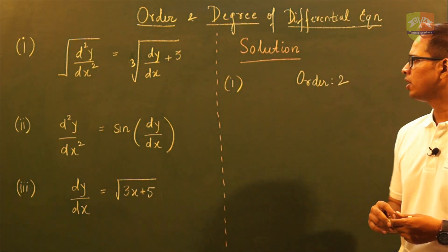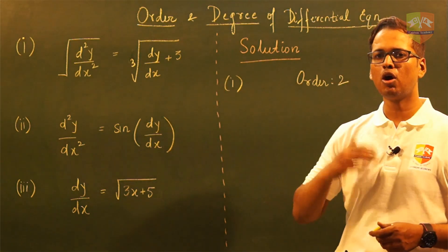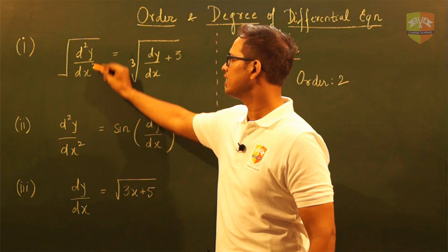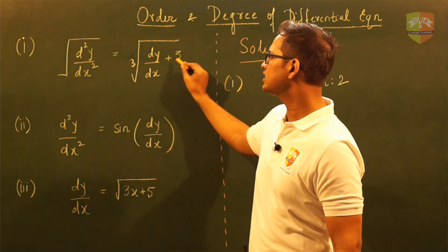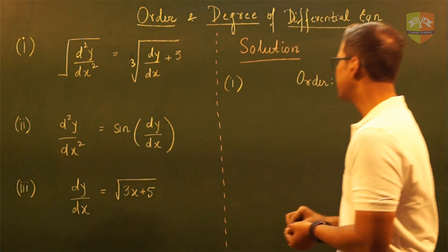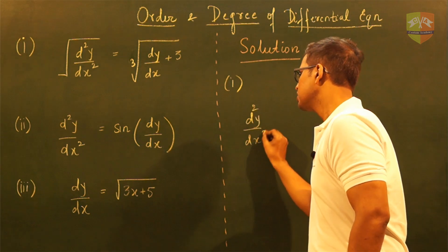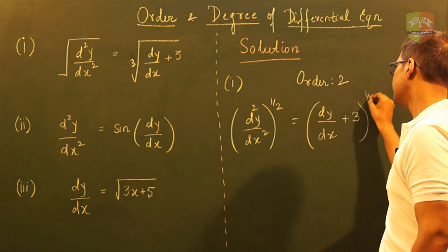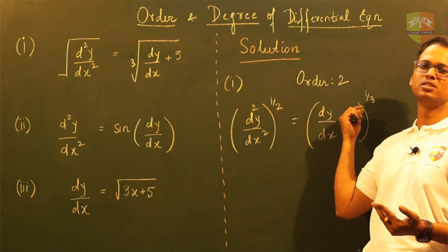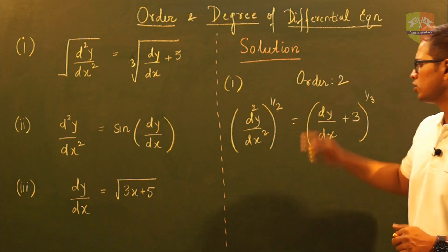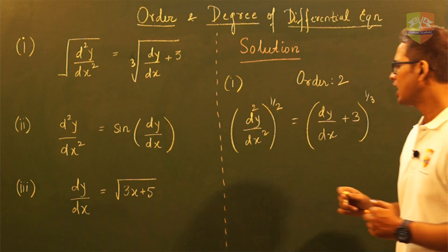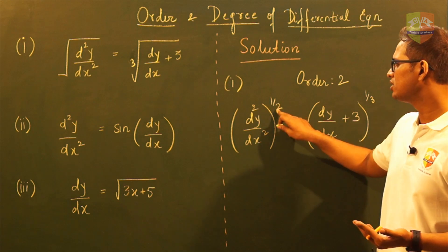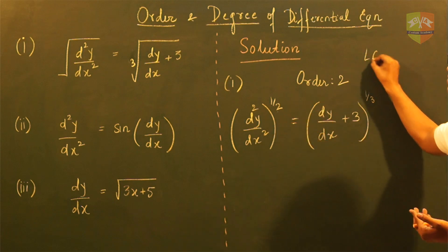Now for the degree of this differential equation, we first need to convert it into polynomial form in all the differential coefficients. In the present stage it is not, because the power of d²y by dx² is half since it's under a square root, and we have (dy by dx + 3) subjected to the cube root power. So I can write this as d²y by dx² to the power of 1/2 equal to (dy by dx + 3) to the power of 1/3. In a polynomial we cannot have these fractional powers — they are strict no-no.